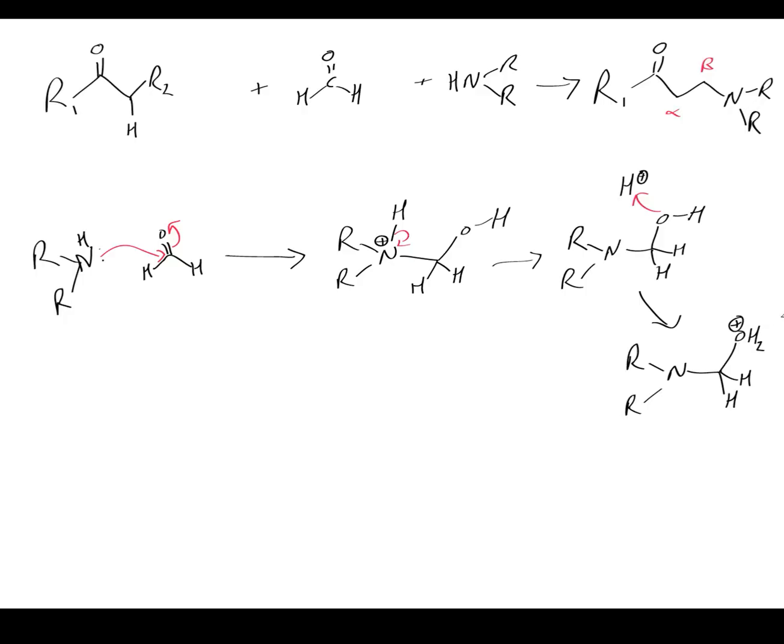Hydrogen bonding will force that through anyway. So what we're going to do now is make it leave. Nitrogen, being the friendly chap that it is, pushes electrons in there and kicks off that water to give us our active Mannich reagent, which is an imine.